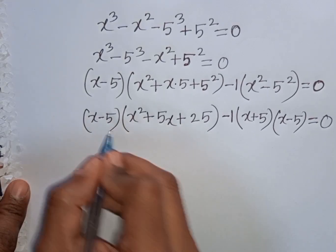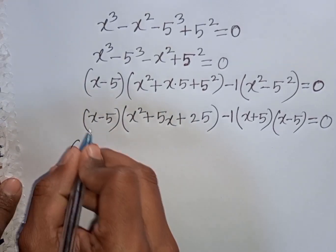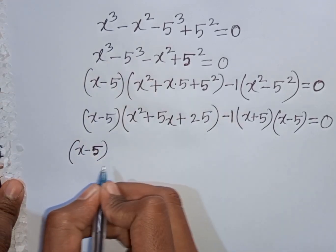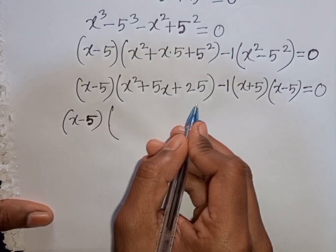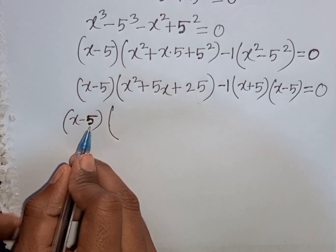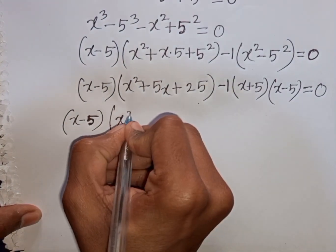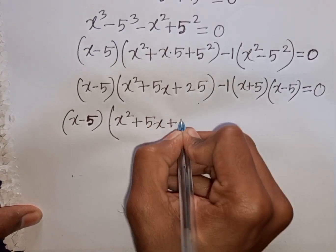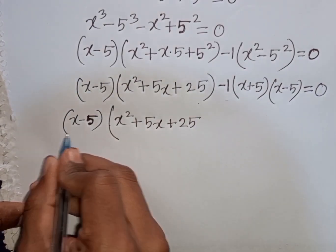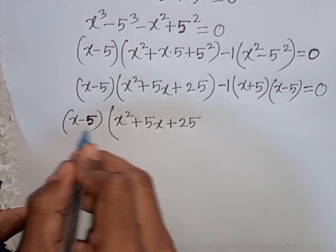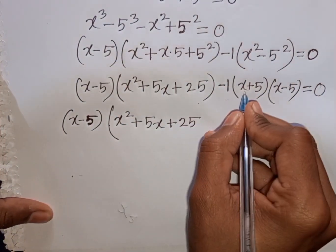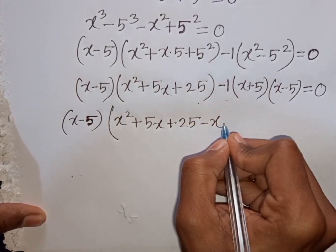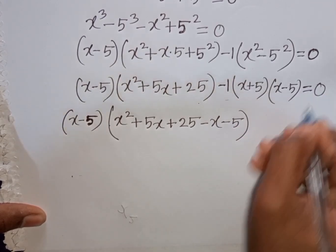Now we see x minus 5 is common. So take common x minus 5. Bracket x minus 5 is out of this bracket. This divided by this — that means x minus 5, x minus 5 will be cancelled. So we have x squared plus 5x plus 25. Then this x minus 5 is cancelled, so we have minus 1 multiplied by x plus 5, which gives minus x minus 5. Then bracket close is equal to 0.